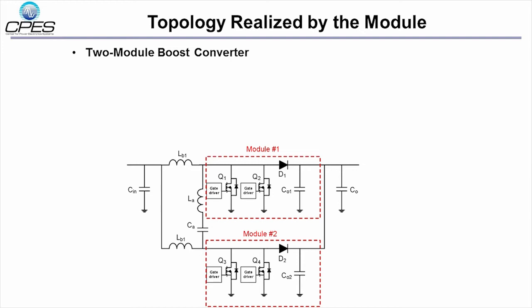The thermally enhanced switch modules are utilized in a soft-switching boost converter topology, of which the input voltage ranges from 100 to 200V, and the output voltage is 390V. For higher power, two modules are interleaved as shown here.